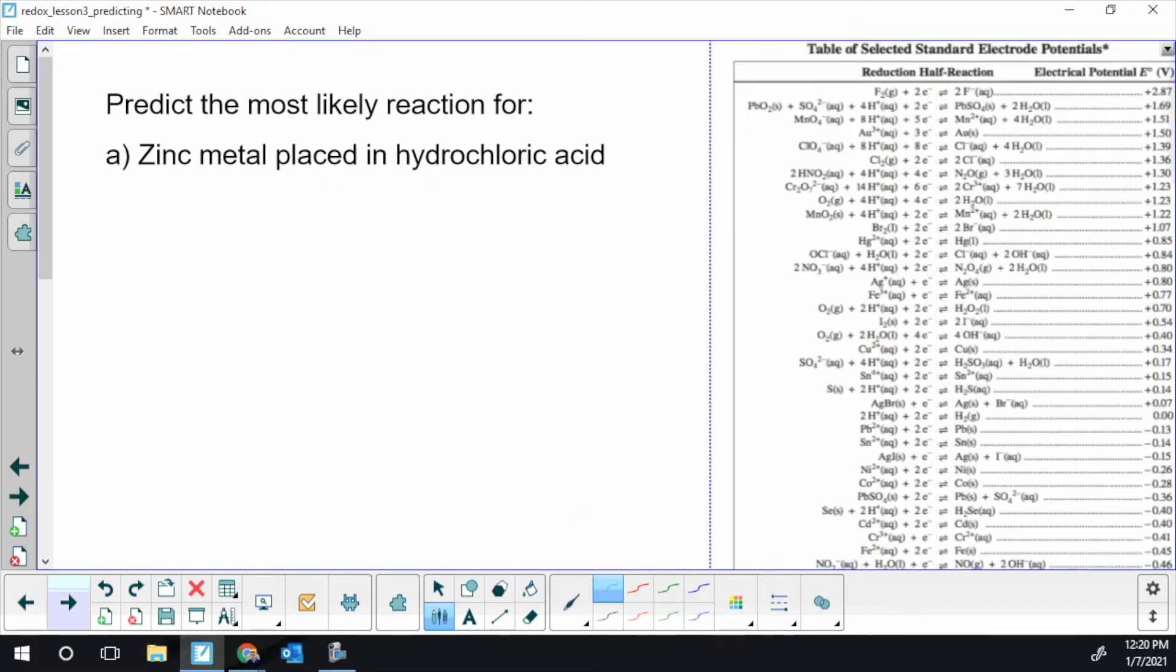So first example, predict the most likely reaction for, and we have zinc metal placed in hydrochloric acid. So we have two chemicals and we have to generate a list, breaking up anything that's ionic or ionizing any strong acids. So I'll start going through these.